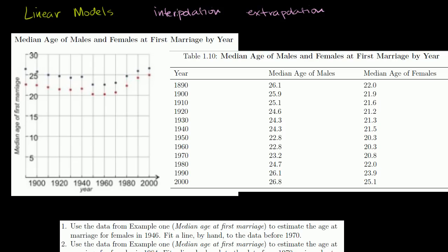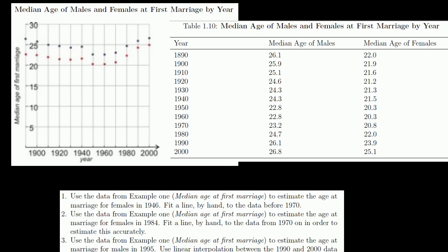Interpolation means trying to estimate what happened between two data points — we're going to do a couple of examples of that in this video. Extrapolation means looking at the last few data points, seeing what that trend looked like, continuing that trend, and seeing what might happen if that trend were to continue. I'll show you some examples of that.